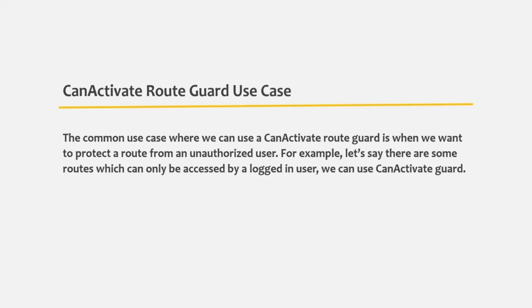The common use case where we can use a canActivate route guard is when we want to protect a route from unauthorized users. For example, let's say there are some routes which can only be accessed by a logged-in user — in that case we can use the canActivate route guard.